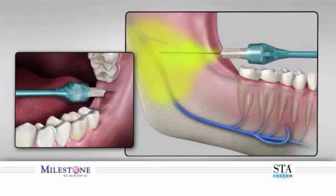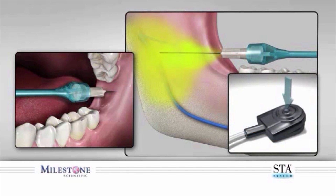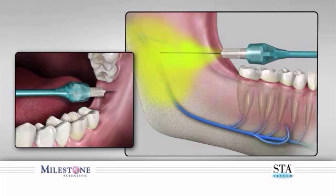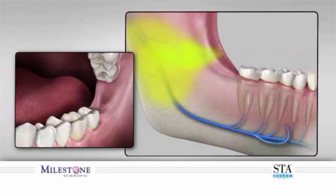Soft tissue anesthesia is acknowledged by subjective statements obtained from your patient. When you have delivered the required dosage, you can remove the needle. To avoid anesthetic solution spray back into the patient's mouth, while the needle is still embedded in the patient's tissue, depress and release the foot control pedal. Count three beeps after releasing the foot control, then totally remove the needle from within the patient's mouth. Direct the needle away from the patient as a small amount of anesthetic solution may still be present.